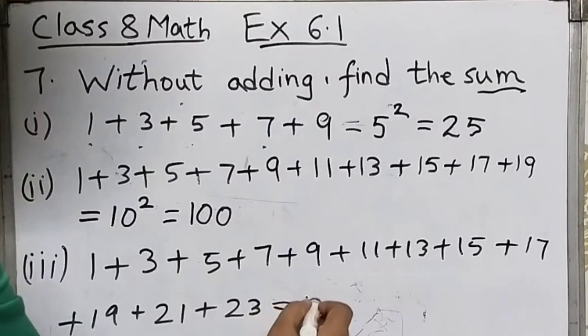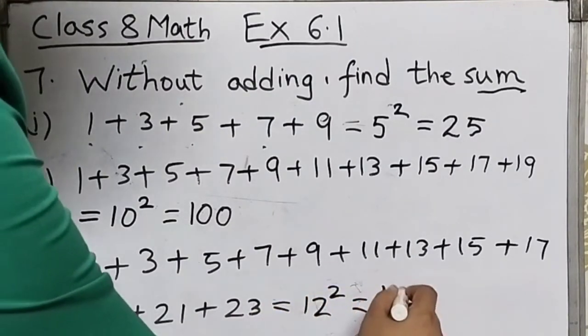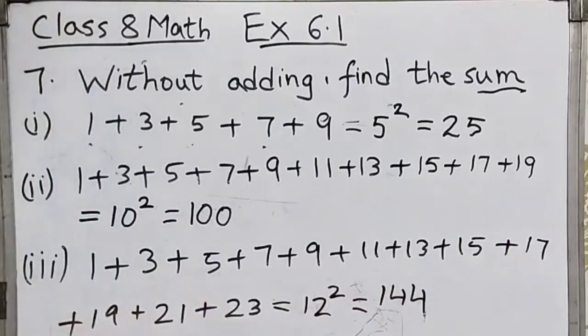So 12 squared equals 144. That's all for now. See you in the next video.